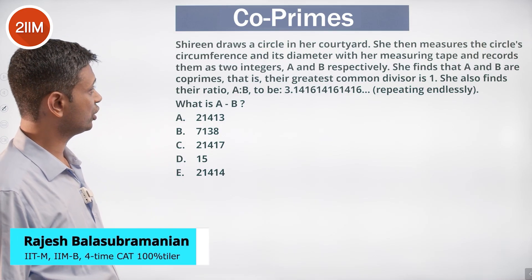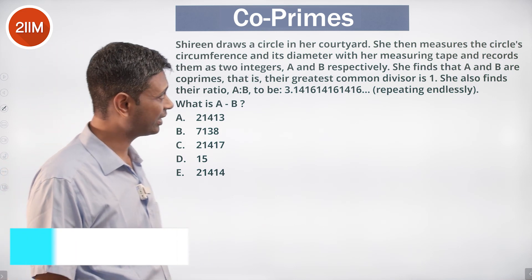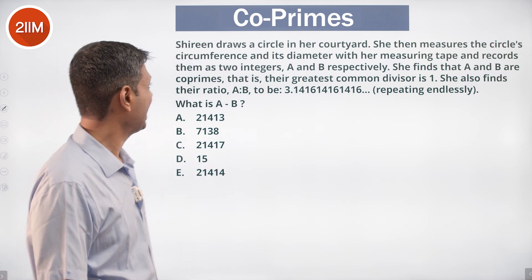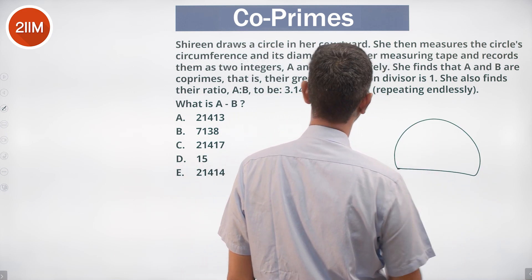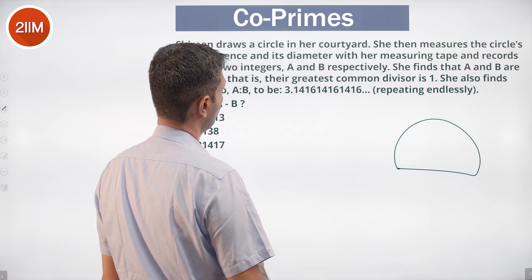Shireen draws a circle in her courtyard. She then measures the circle's circumference and its diameter with her measuring tape and records them as two integers A and B respectively. What is A, what is B?